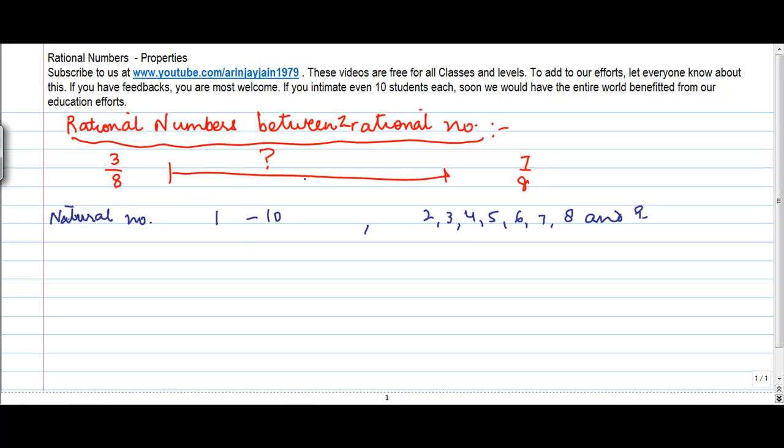But how do you do that between rational numbers? Of course, we know that between 3/8 and 7/8, there is something like 4/8. Then you have 5/8, then you have 6/8. So these all are there. It's easier to point them out because in both these cases, the denominator is common.